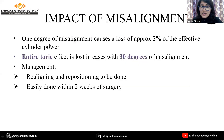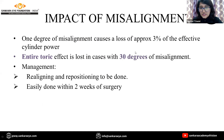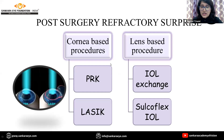It is absolutely vital to do a thorough viscoelastic wash to prevent any malrotation or misalignment. Even one degree of misalignment can cause a loss of approximately three percent of effective cylinder power. If there is 30 degrees of misalignment, the entire toric effect is lost. We can manage this by realigning and repositioning, which is easily done within two weeks of surgery.